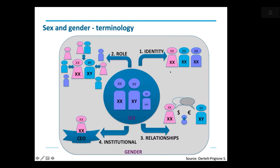When we come to relationships, it's the interaction between personal identity and what is expected from outside — what does that mean in terms of negotiation of care duties, work duties, salary, and professional advancement. There's another layer worth mentioning: institutional gender, meaning what an organization specifically expects of you as a CEO, professor, or director, and what happens if you don't conform to what is expected.